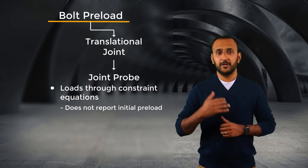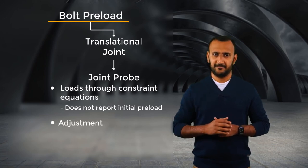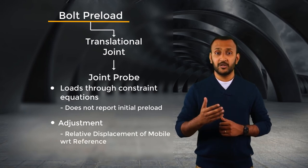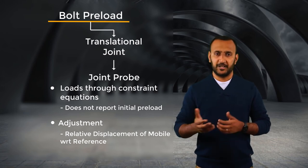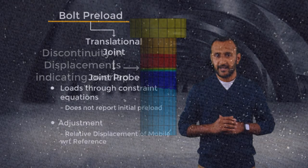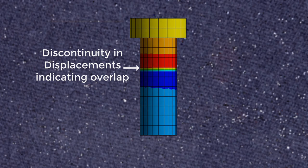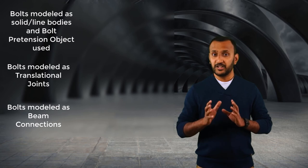The same probe can be used to report the adjustment too, but it has to be defined as a separate object. When we change result type to relative displacement, it reports the displacement of mobile part with respect to reference, which is nothing but the adjustment. In both the cases, you'll notice that one half of the bolt overlaps with the other and this overlap is same as the adjustment. But depending on the method used for modeling the bolt or defining the preload, the adjustment may change.